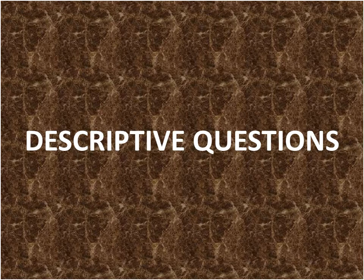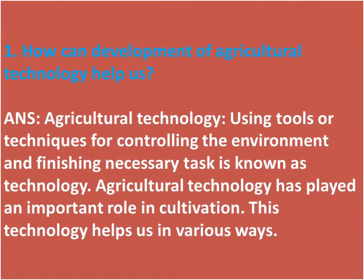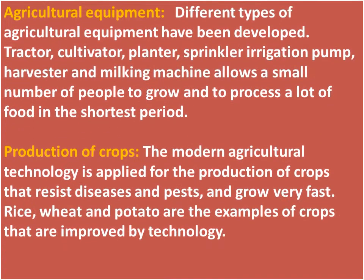Descriptive question number one: How can development of agricultural technology help us? Answer: Using tools or techniques for controlling the environment and finishing necessary tasks is known as agricultural technology. Agricultural technology has played an important role in cultivation. This technology helps us in various ways.